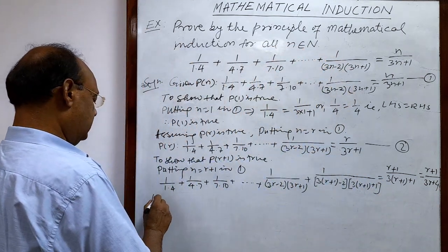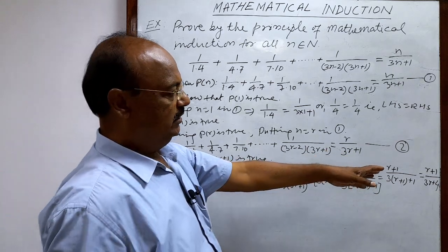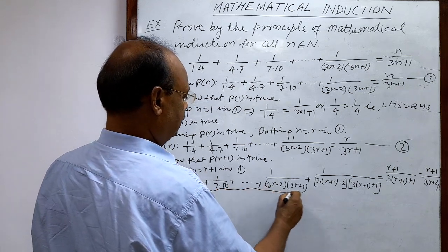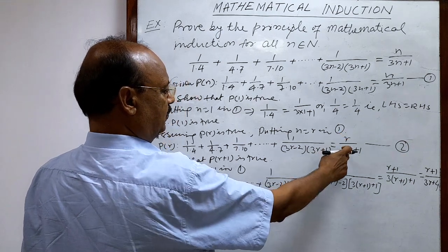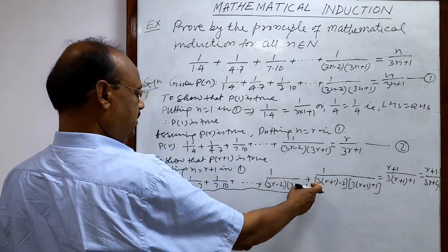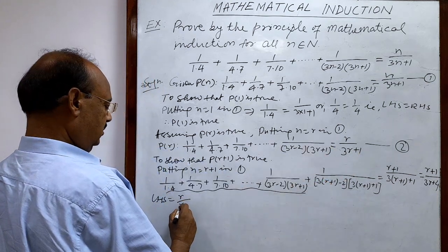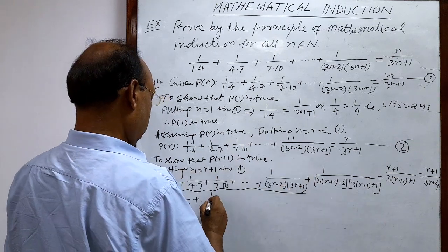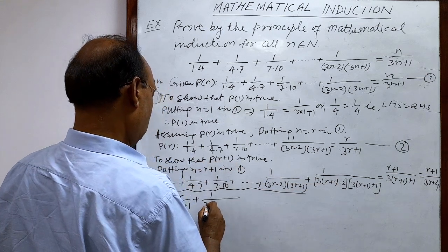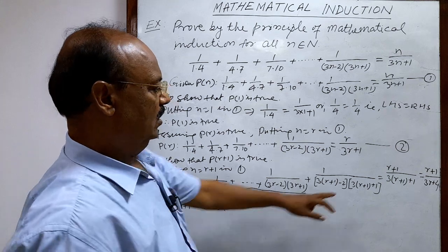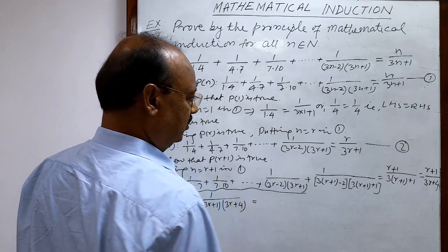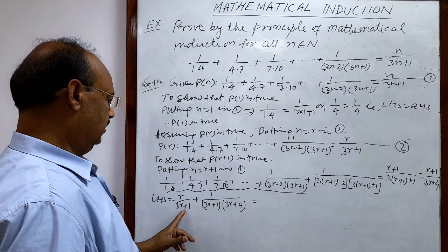Let us start with the left-hand side and show it equals the right-hand side, then we can say P(r+1) is true. Up to the second-last term, by relation number 2, the sum equals r/(3r+1). So we write r/(3r+1) plus the last term 1/((3r+1)(3r+4)). Now let us take 1/(3r+1) as a common factor.